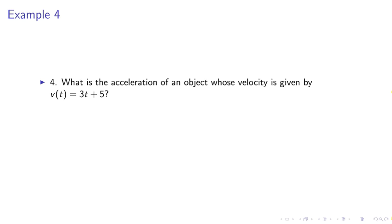Example 4, what is the acceleration of an object whose velocity is given by v of t equals 3t plus 5? The solution is given by a equals dv dt, which is simply 3 meters per second squared.